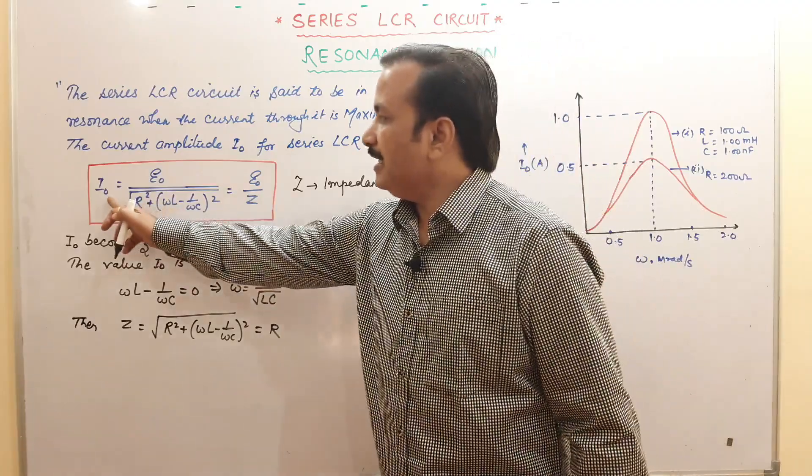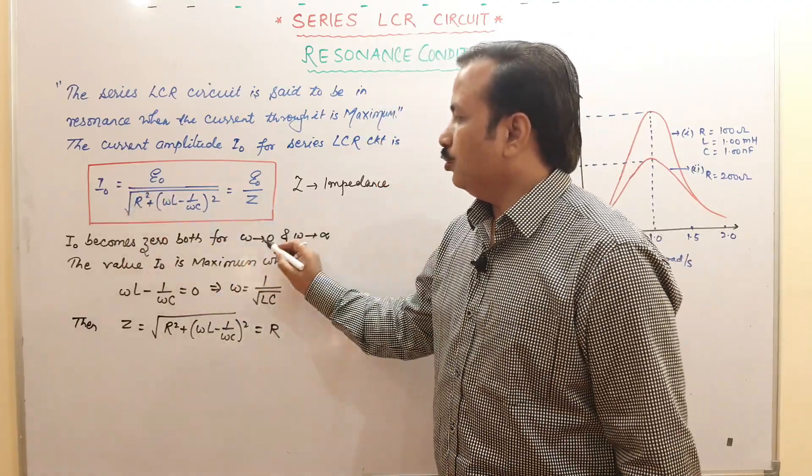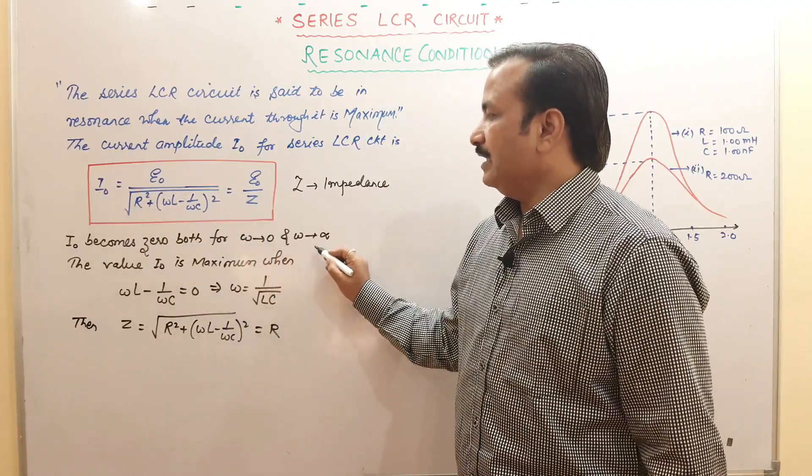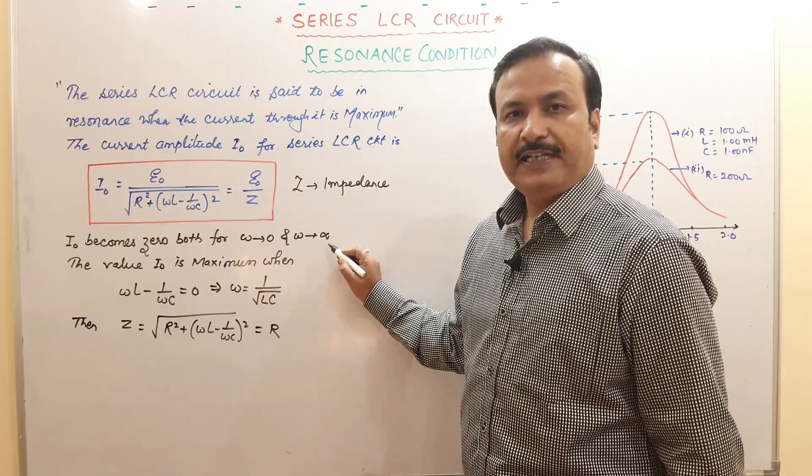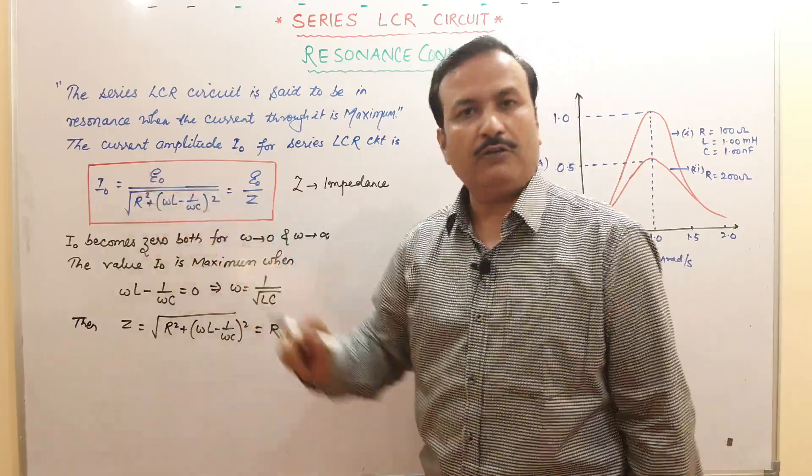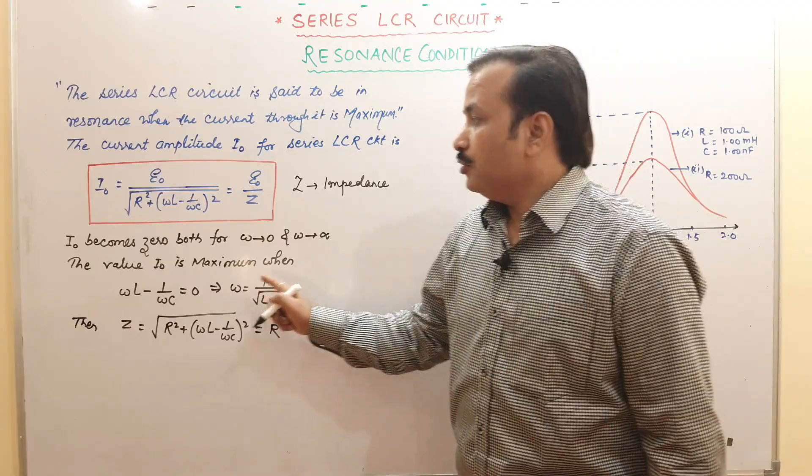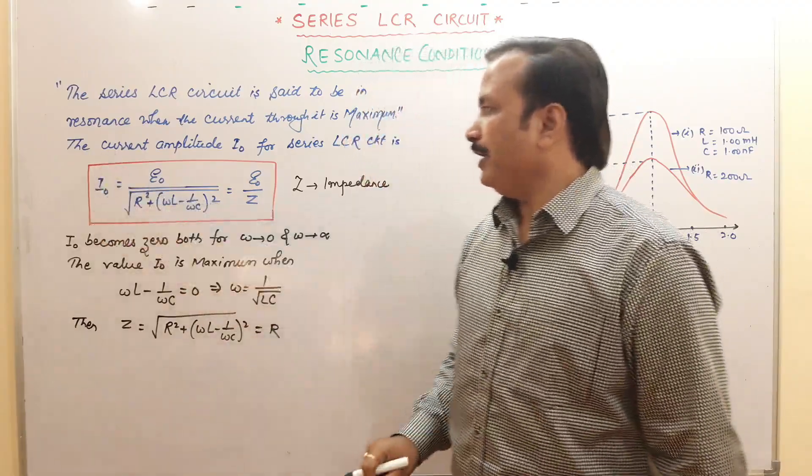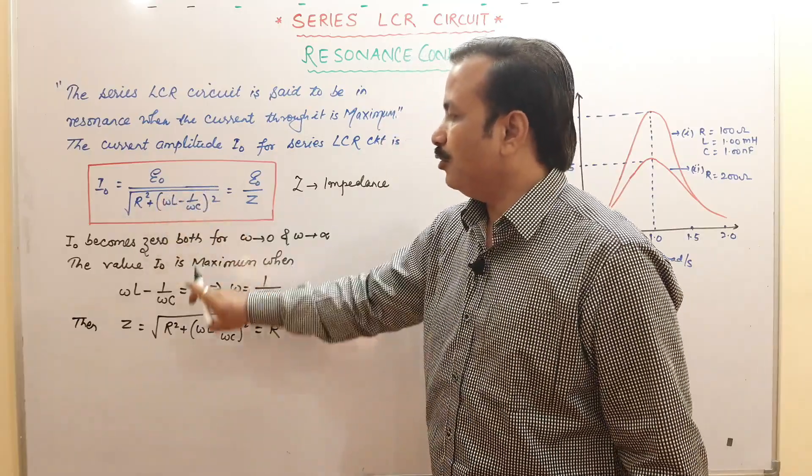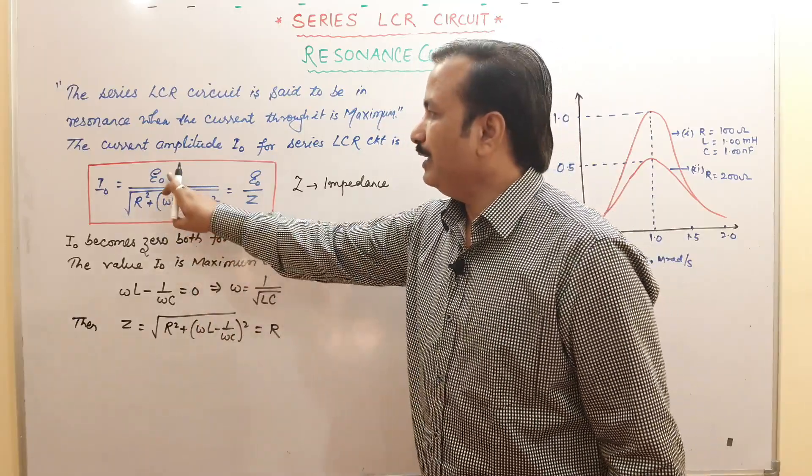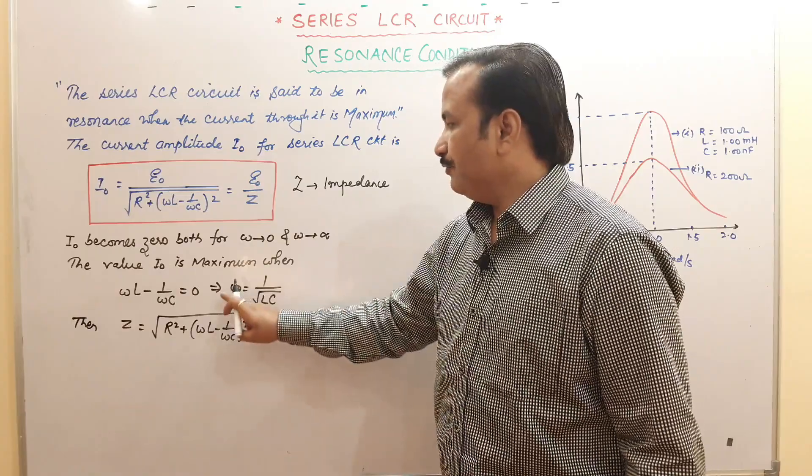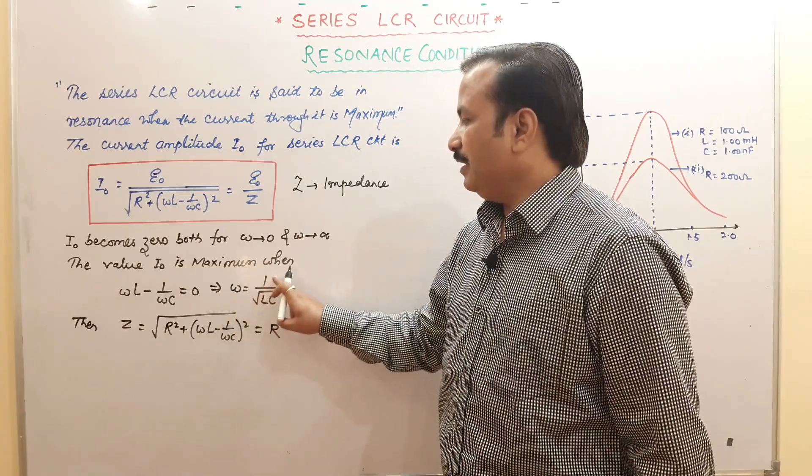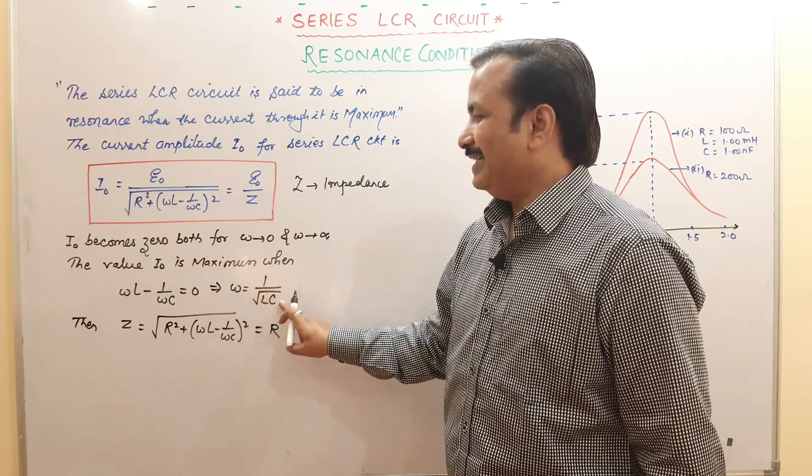When will this i naught become zero? Either make omega zero or make omega infinity. In both situations i naught will be zero. The value of i naught is maximum when omega l minus 1 upon omega c is made zero. So we will get e naught upon r only, which is equal to omega equal to 1 upon under root lc.